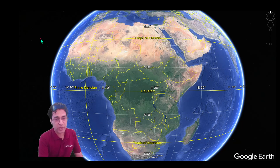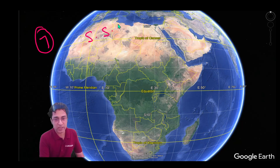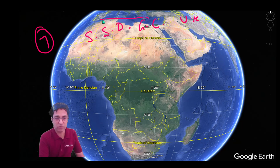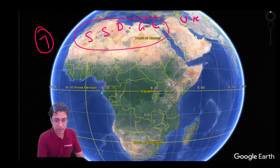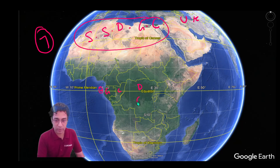Now let us travel to Africa, where the equator passes through seven countries. We can use a memory trick: S, S, D — or Solid State Drive — Graphics Card, and United Kingdom. I am sure all the techies would be aware of these terms. Now let us look at the names of the countries. This country is Sao Tome and Principe, this is Gabon, this is Congo, this is Democratic Republic of Congo, this is Uganda, this is Kenya, and this is Somalia.